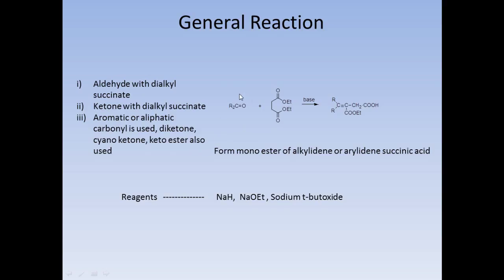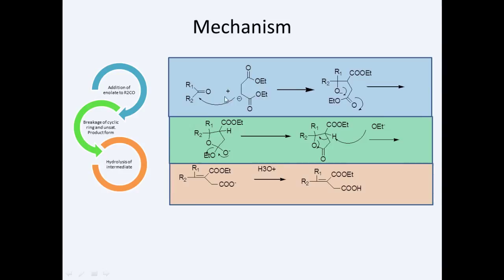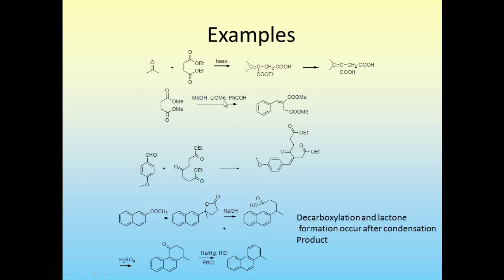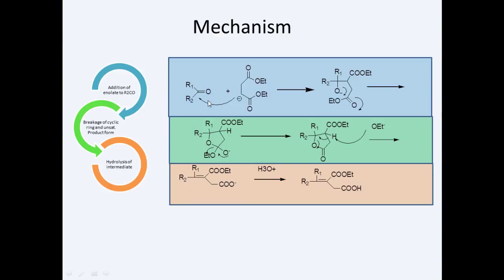This is the mechanism: the base abstracts the hydrogen, a negative charge species is generated and attacks the electrophilic carbon. The electrophilic carbon gets condensed with the ester. This ester gives the cyclic product.